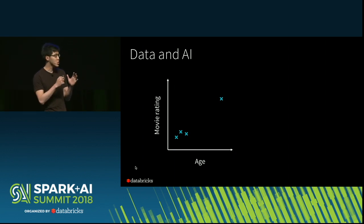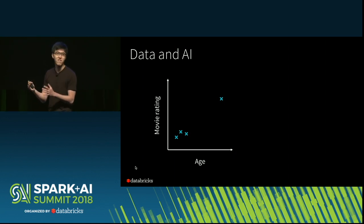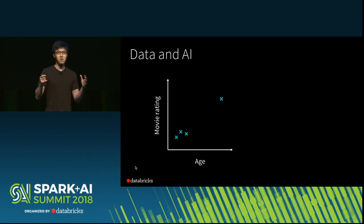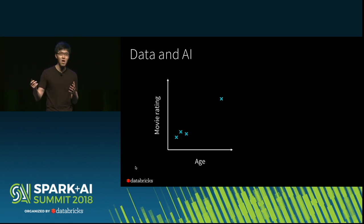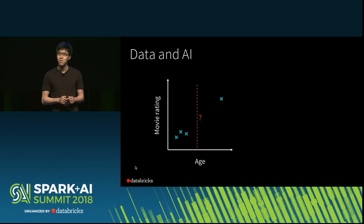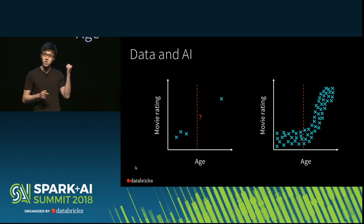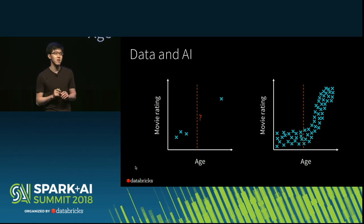Why? To illustrate with a very simple example, let's imagine Lester wanted to build a predictor for a specific movie. The only feature he has is the age of the user. In this case, there are actually four data points. Maybe there's a correlation between age and the rating the user would give on this specific movie, but maybe not. What happens if you want to predict the rating a particular user would give? It's kind of unclear. Now imagine you have a lot more data — it becomes very obvious that for a user of this particular age, it's very unlikely the user would rate the movie highly.